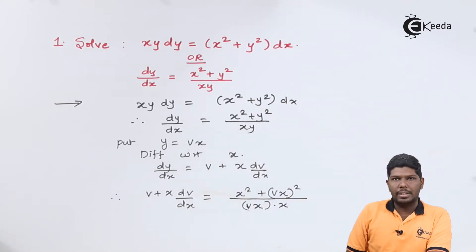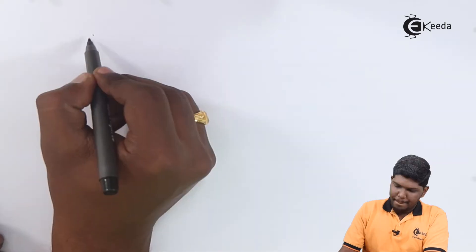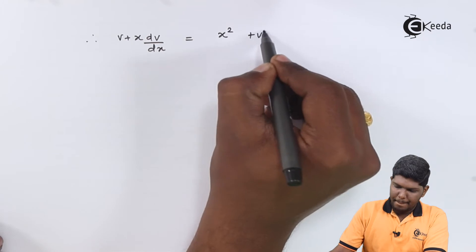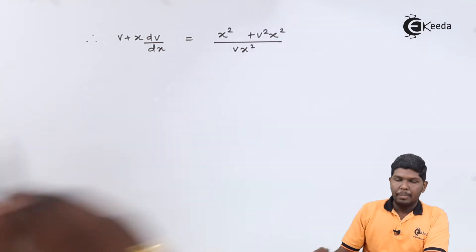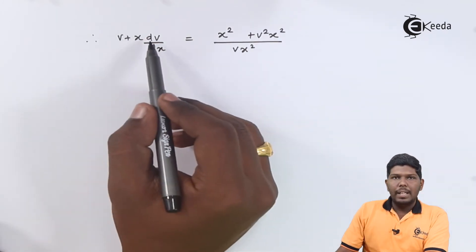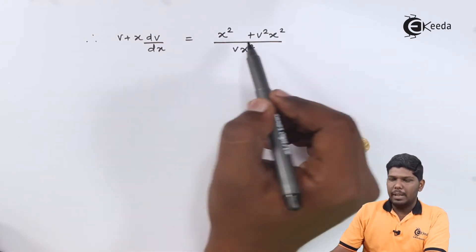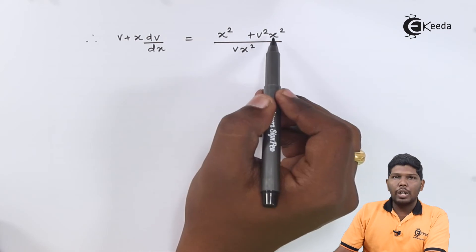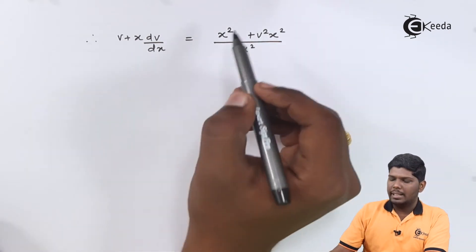This will give you v + x(dv/dx) = (x² + v²x²)/(vx²). Now here we can take x² common and eliminate x² as it will be cancelled from the denominator.